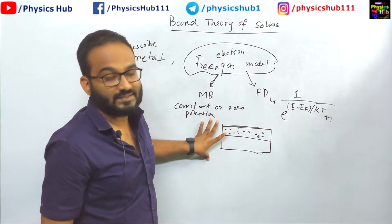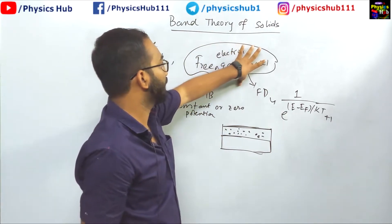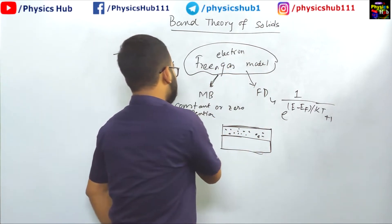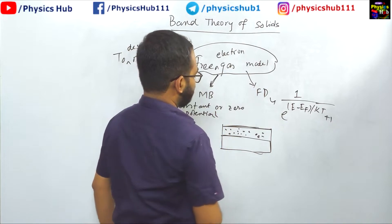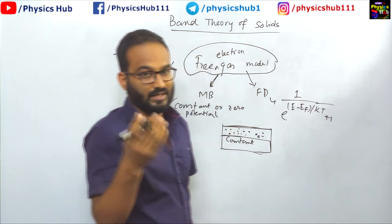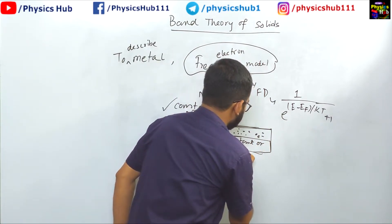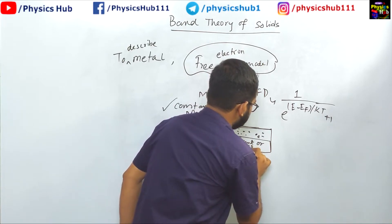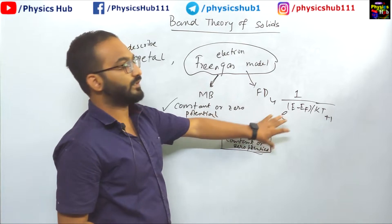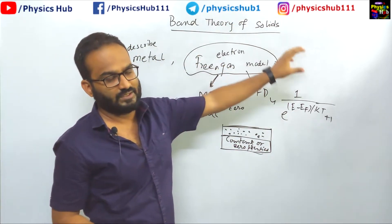To explain certain phenomena which could not be explained by the free electron gas model, this theory was modified. Instead of constant or zero potential, in the free electron gas model, electrons could freely move, which is why it's called the free electron gas model.